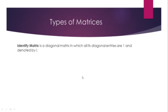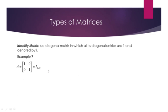Identity matrix — a diagonal matrix in which all diagonal entries are 1, denoted by I. Example 7: the 2×2 identity has 1s on the diagonal, and the 3×3 identity similarly has 1s on all diagonal entries.